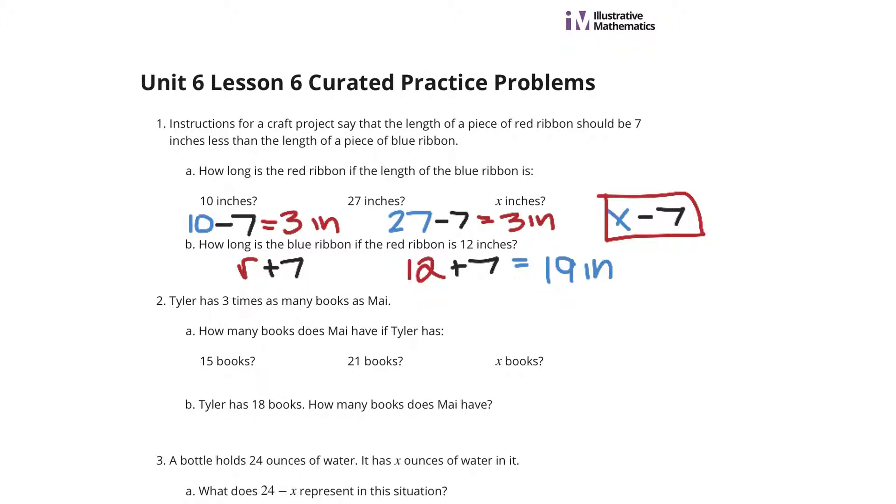Now Tyler has three times as many books as May. How many books does May have if Tyler has 15 books? Well, Tyler has three times as many. So if we take 15 and divide it by 3, we get May at 5 books.